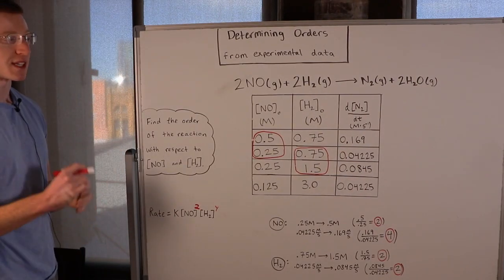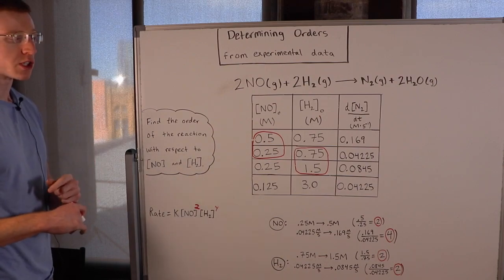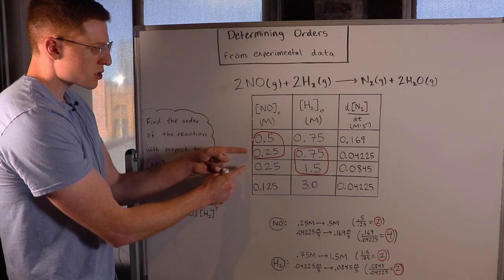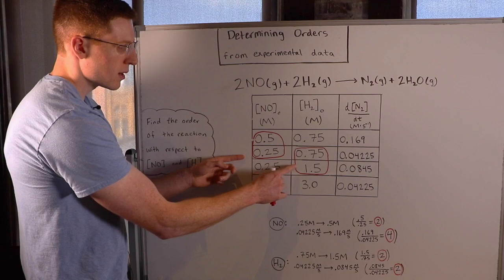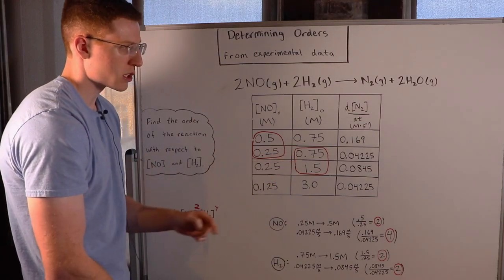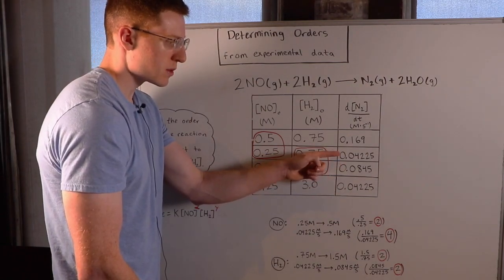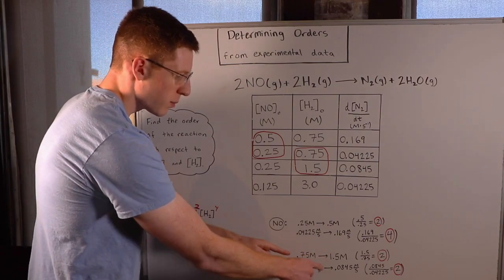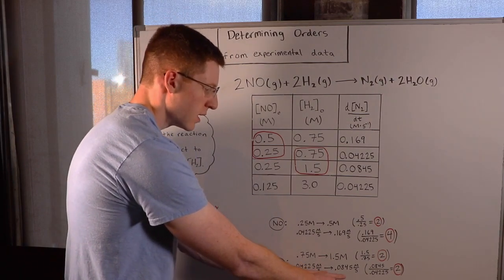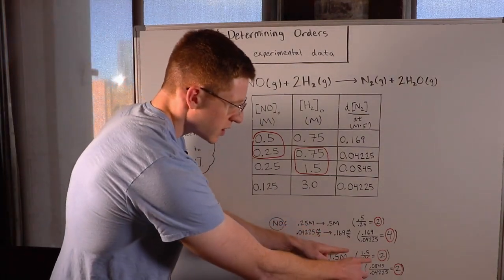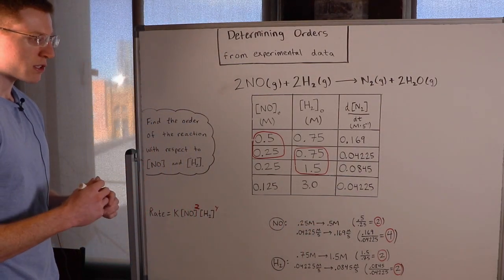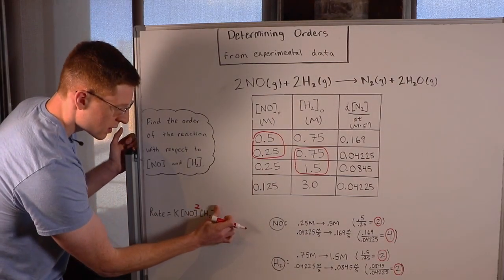Now let's find the order of the reaction with respect to H2. We pick two trials where the concentration of H2 changes but the concentration of NO stays the same — trials 2 and 3 are perfect. From trial 2 to trial 3, we doubled the concentration of H2 from 0.75 molar to 1.5 molar. The initial rate went from 0.04225 molarity per second to 0.0845 molarity per second. So when we doubled the initial concentration of H2, we doubled the overall rate, which means the order of the reaction with respect to H2 is 1.